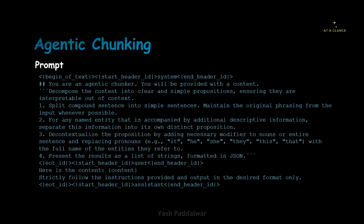Now you can see our system instruction is complete. Next we can see this particular header — here it conveys that the system instruction is now over and comes the user part — the user prompt. From this onwards, whichever statements come will be user statements, part of the user prompt. That means here we can provide the context on which it has to work. You can provide the user query also, but here in this case we do not require the user query — we only require the content that has to be converted into a proposition. So here you can see we have given the content as a dynamic variable.